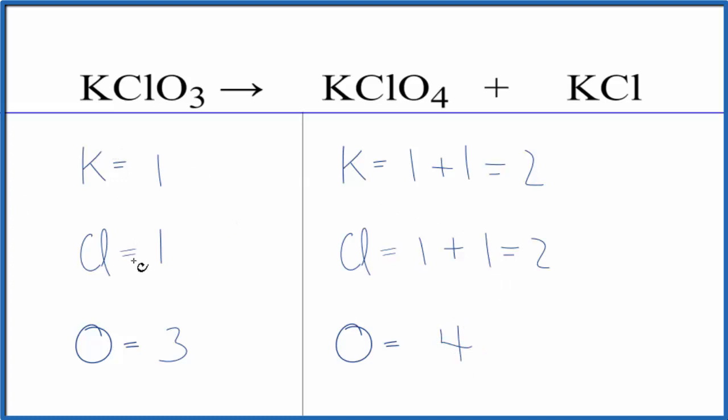Let's balance the potassium and the chlorine first. If we put a two here, one times two, that'll give us two. One times two, two there. Three times two, that'll give us six.